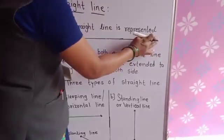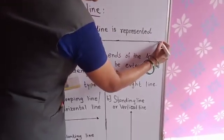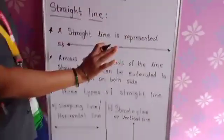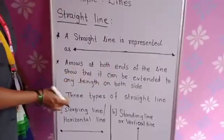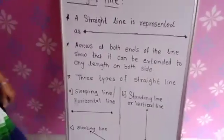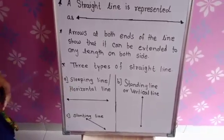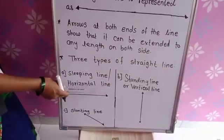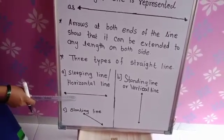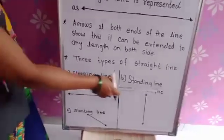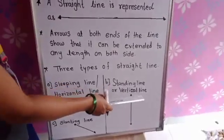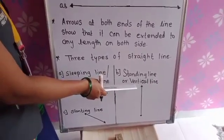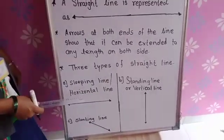Standing line is vertical line. And slipping line is horizontal line.